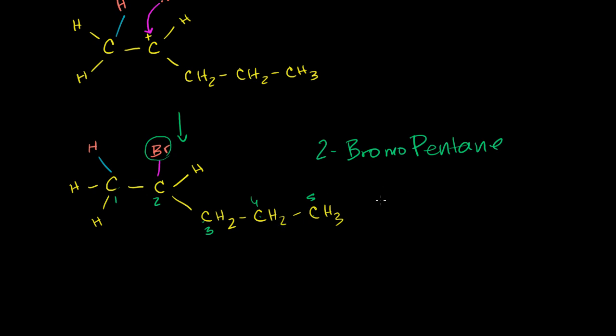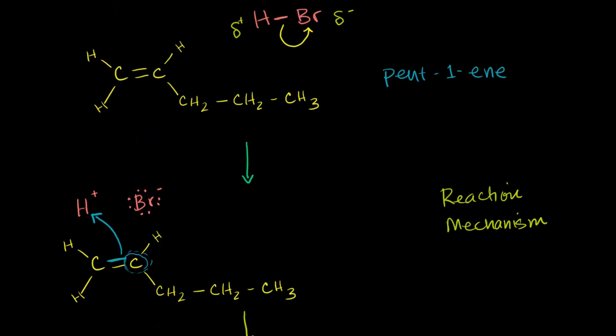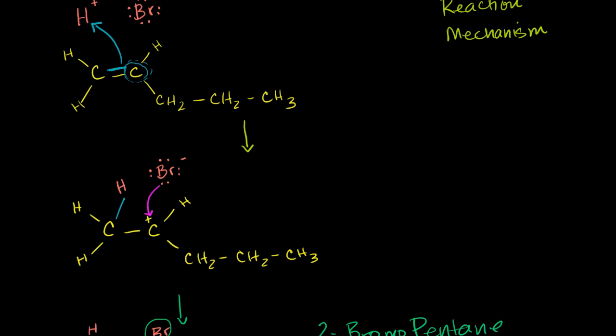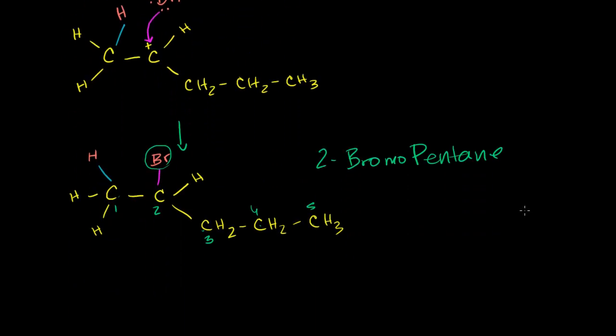So by adding the addition of hydrogen bromide to pent-1-ene, we were able to come up with a reaction mechanism to get to 2-bromopentane.